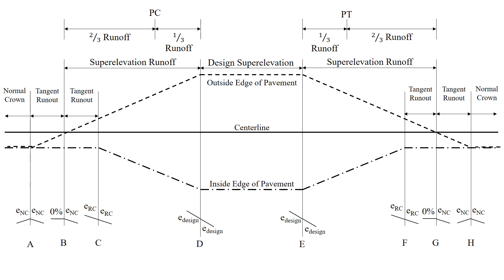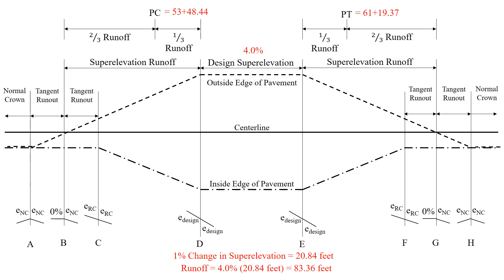We'll use a profile view looking at a relative gradient for the inside and outside edge of pavement relative to the centerline. We're going to plug in the values we know for this particular curve. We're given the PC and PT stations from our design plans: the PC is at station 53 plus 48.44, the PT is station 61 plus 19.37, and we have a design superelevation of 4%. From our design plans, a 1% change in superelevation occurs over a distance of 20.84 feet, so we can calculate our superelevation runoff.